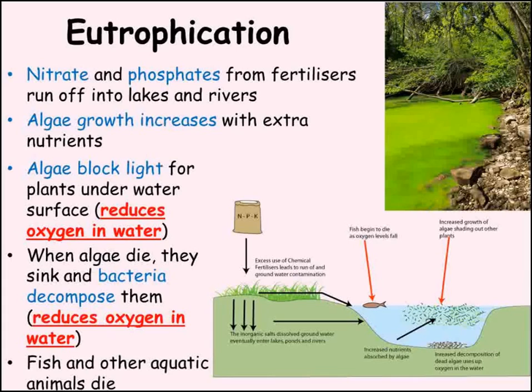Eutrophication is caused by excess nitrates and phosphates reaching these waters. After the fertilisers have been added to the field, some will end up in the water running off the land and end up in lakes or rivers. This increase in levels of nitrates and phosphates causes the algae to grow very rapidly. Algae grow on top of the water, blocking any sunlight from entering. Water plants living under the surface are unable to photosynthesise, which reduces the oxygen level dissolved in the water. These oxygen levels are reduced further when the algae die, as they sink to the bottom before being decomposed by bacteria which use up the remaining oxygen. The river or lake now has extremely low oxygen levels, which prevent animals such as fish from surviving in the water.